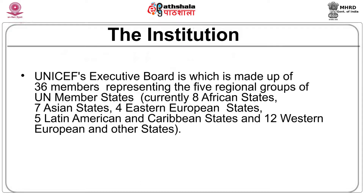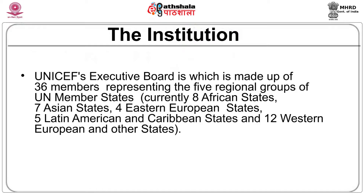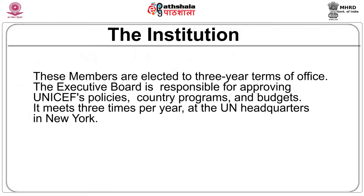What is the executive board of UNICEF? The UNICEF executive board is made of 36 members representing five regional groups of UN member states — currently eight African states, seven Asian states, four Eastern European states, Latin American and Caribbean states, and Western European and other states. These members are elected to a three-year term of office. The executive board is responsible for approving UNICEF's policies, country programs, and budgets. It meets three times per year at the UN headquarters in New York.